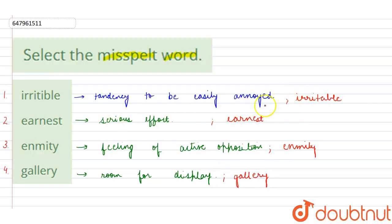We can observe that option one, that is the spelling of irritable, is wrongly spelled. So I hope this is clear. Thank you.